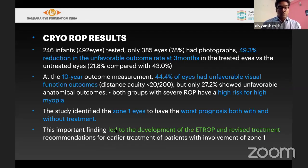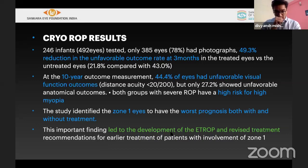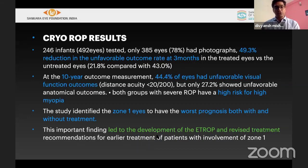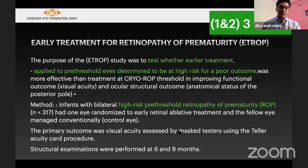The cryo-ROP study raised the question: should we wait until threshold develops (stage 3 in zone 1 or 2 with plus, 5 contiguous or 8 non-contiguous clock hours), or can we treat earlier? The answer was yes — we can treat earlier. This led to the ETROP study — Early Treatment of ROP — which identified a high-risk population in the pre-threshold stage.